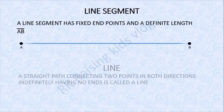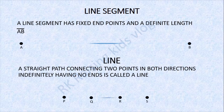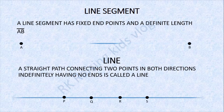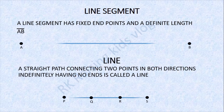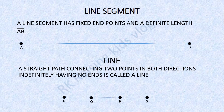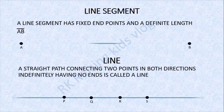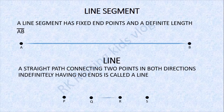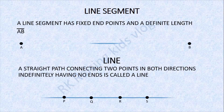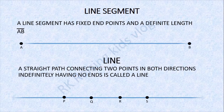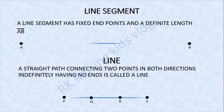But what is a line? A straight path connecting two points in both directions indefinitely having no ends is called a line. For example, points P, Q, R, S — the line is passing through all the points. But if it is not passing through all points, then it is called a P, Q, R, S line segment.